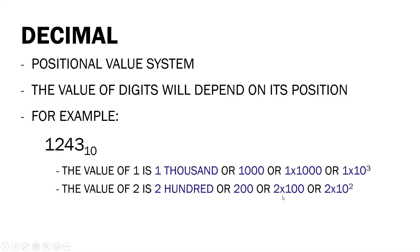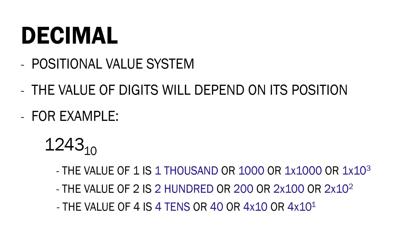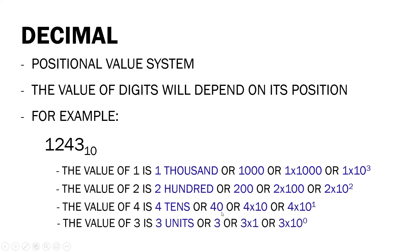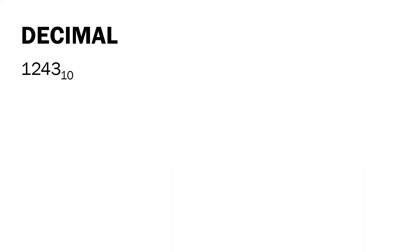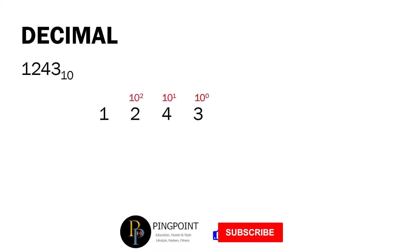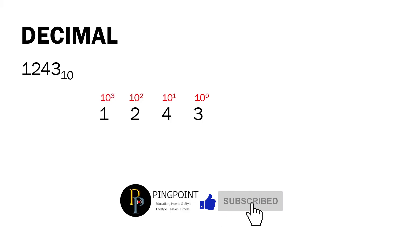Next, the value of 2 is 200, written as 2 times 10 raised to 2 — ten times ten is 100, times 2 is 200. Next, the value of 4 can be written as 4 times 10 raised to 1 — ten times 1 is 10, so 10 times 4 is 40. Then the value of 3 can be written as 3 times 10 raised to 0 — any number raised to zero is 1, so 1 times 3 equals 3. So for 1243, the rightmost digit has positional value 10 raised to 0, next is 10 raised to 1, then 10 raised to 2, and 10 raised to 3.